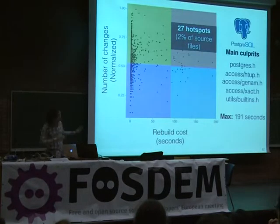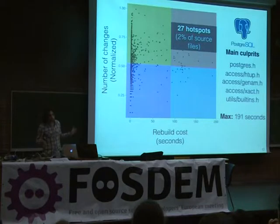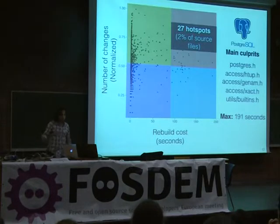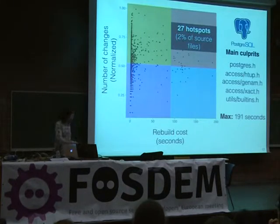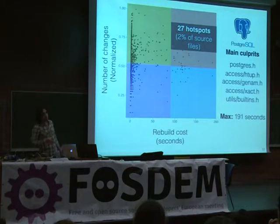Next we look at the Postgres system. It looks a little different — only 2% of their files were identified as hotspots, and there were about five main culprits. But the worst case grew a little bit: we're just over three minutes now.